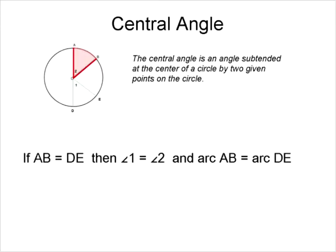Now, if we have a chord AB and another chord DE, and we're told that those two chords are equal length, what we now know is that the angle formed by chord AB must be the same as the angle formed by chord DE — angle one must equal angle two. The same chord is subtended by an angle, so the only way that can happen is if these angles are identical. So we know that the chords are equal, the angles are equal, and that also tells us that arc AB and arc DE are equal.